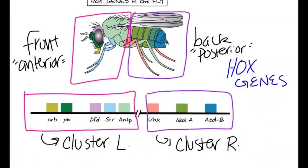Hox genes are arranged in clusters, with their order on the chromosome mirroring the order they appear in the body. For example, genes on the left of the chromosome control the front, and genes on the right control the back.